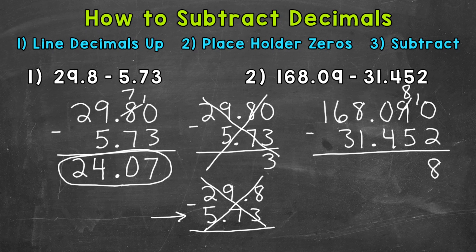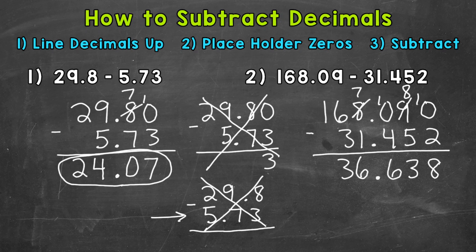Then we move to the hundredths: 8 minus 5, which is 3. Now for the tenths, we have 0 minus 4, so we're going to need to borrow. 10 minus 4 is 6. Remember, bring your decimals straight down — it should be lined up throughout the entire problem when we subtract decimals. Then we move to the ones: 7 minus 1 is 6. Then the tens: 6 minus 3 is 3. And then finally the hundreds, where we have 1 minus 0, so we can just bring the 1 down. And we have an answer of 136 and 638 thousandths.